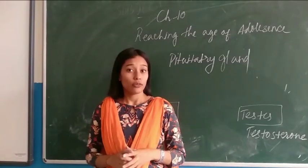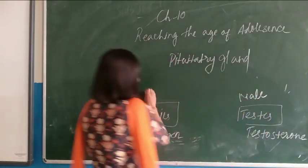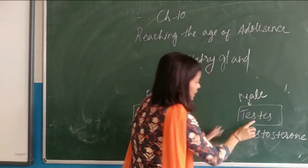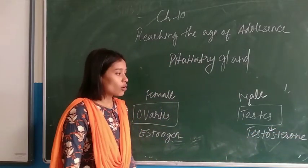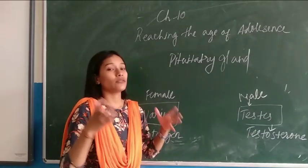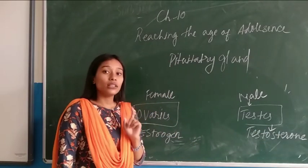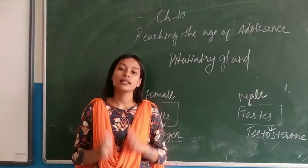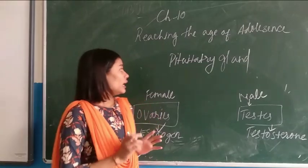On the onset of puberty, the testes of the male will release a hormone called testosterone. This testosterone hormone is responsible for all the secondary sexual characters in boys, like hair growth in different parts of the body. On the other hand, when the girl reaches puberty, the ovaries will release a hormone called estrogen. Estrogen is responsible for secondary sexual characters in females, like development of breasts and mammary glands.